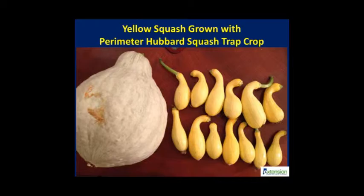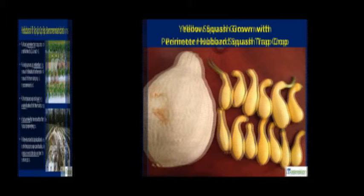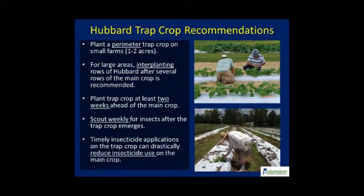Various popular seed companies sell baby blue and New England Hubbard seeds. We bought untreated Hubbard from Johnny Seeds and High Mowing Organic. Trap cropping is not a silver bullet solution to all pest problems, so producers have to be creative in adapting this tactic on their farm. This IPM tactic can even be scaled up for protecting large acres of yellow squash by interplanting rows of trap crop instead of a perimeter design.